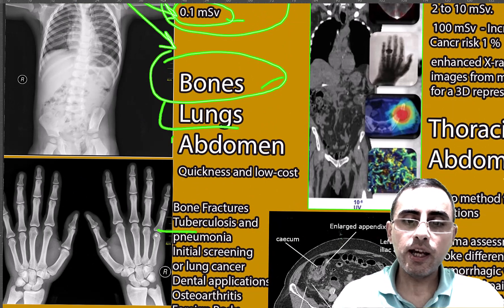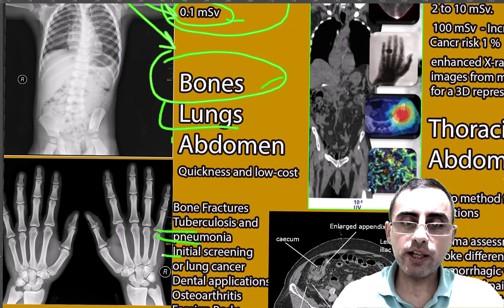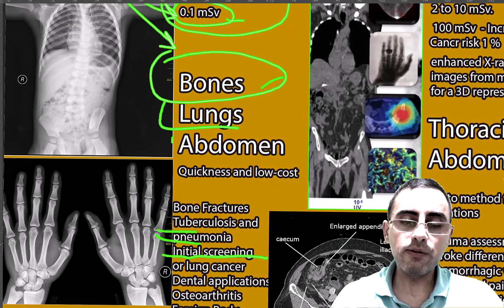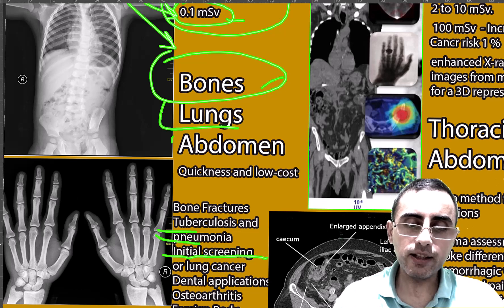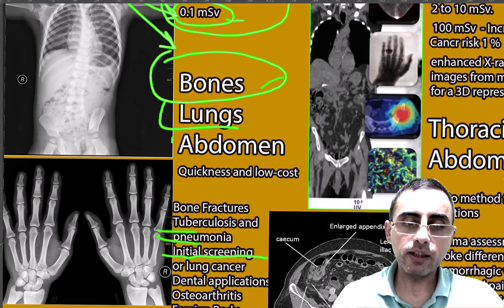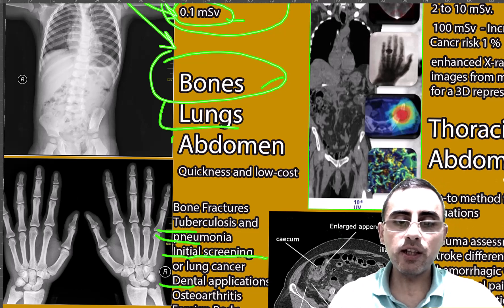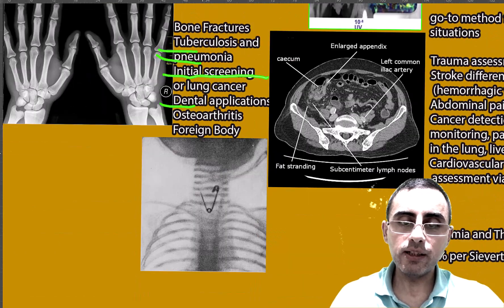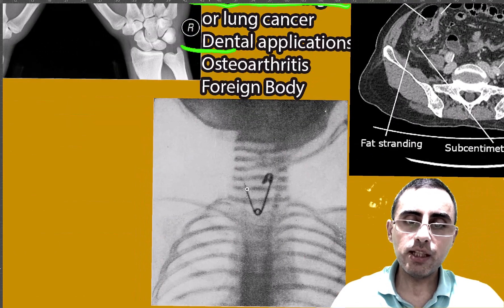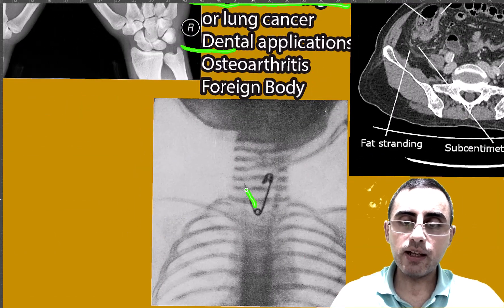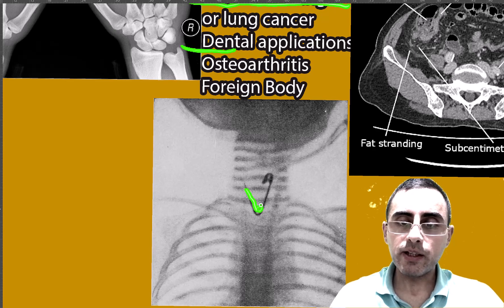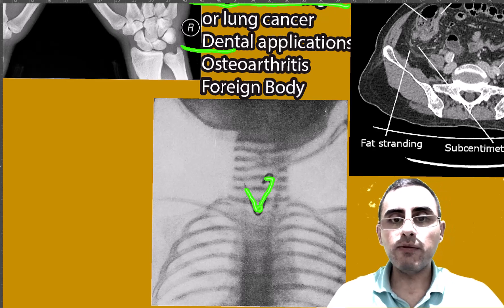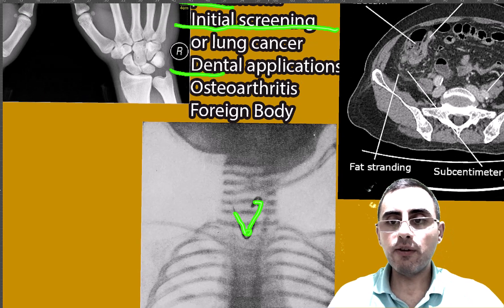X-ray is more useful for bones and lungs. It can visualize tuberculosis and pneumonia, and can be used as an initial test for lung cancer. It's also important for dental procedures, osteoarthritis, and foreign bodies — for example, you can see a pin inside a child's throat.